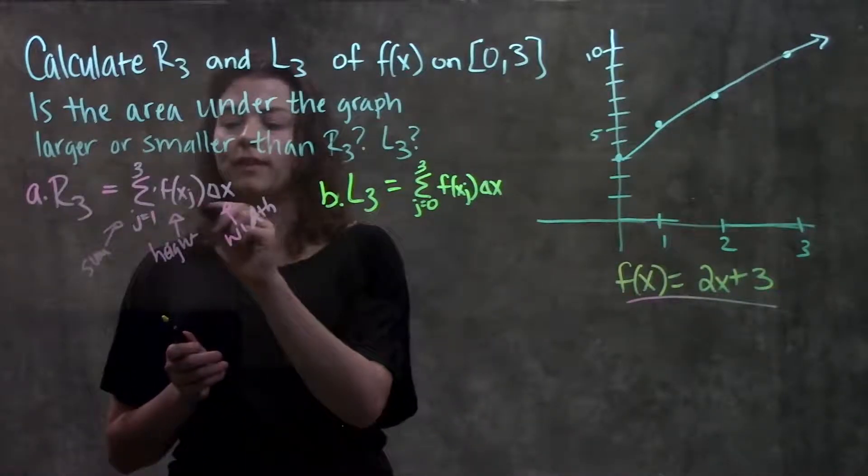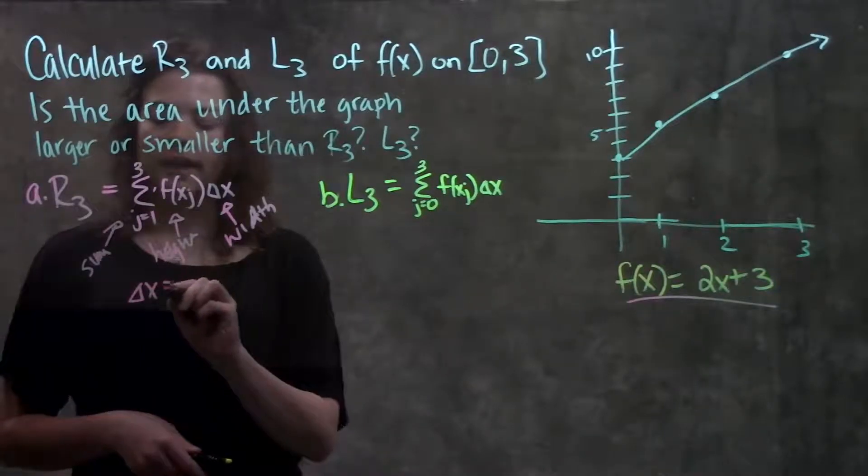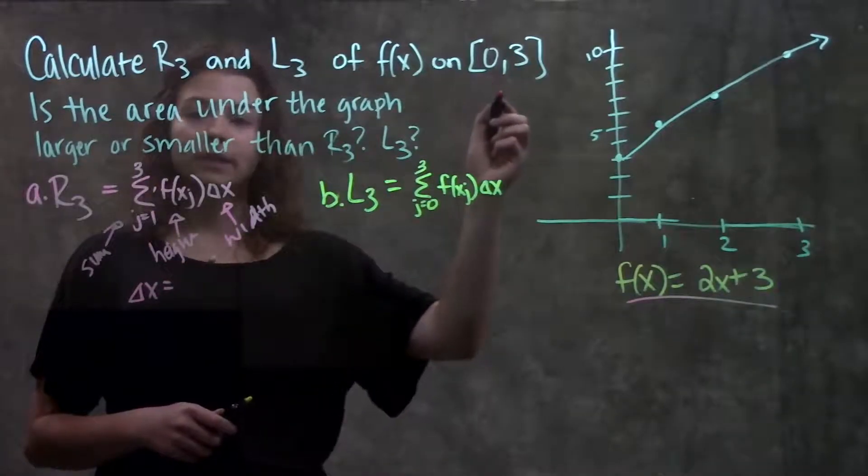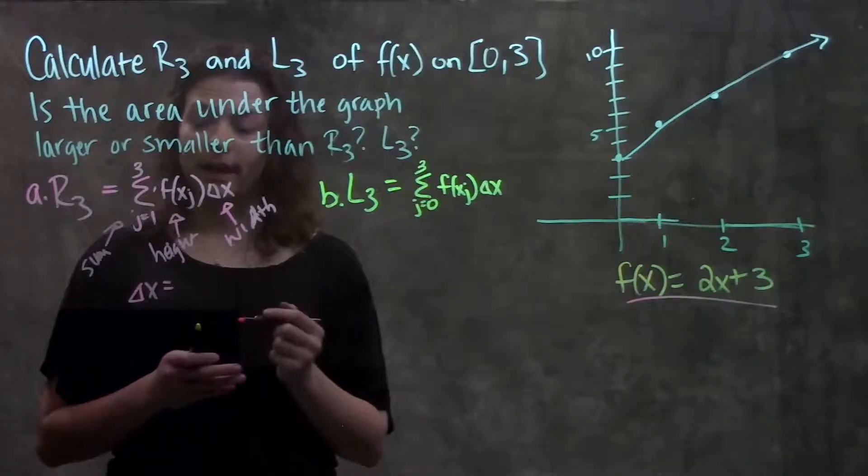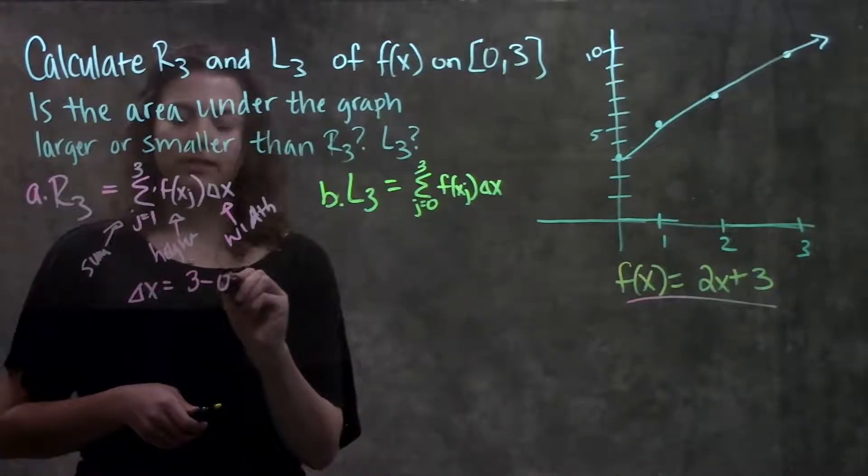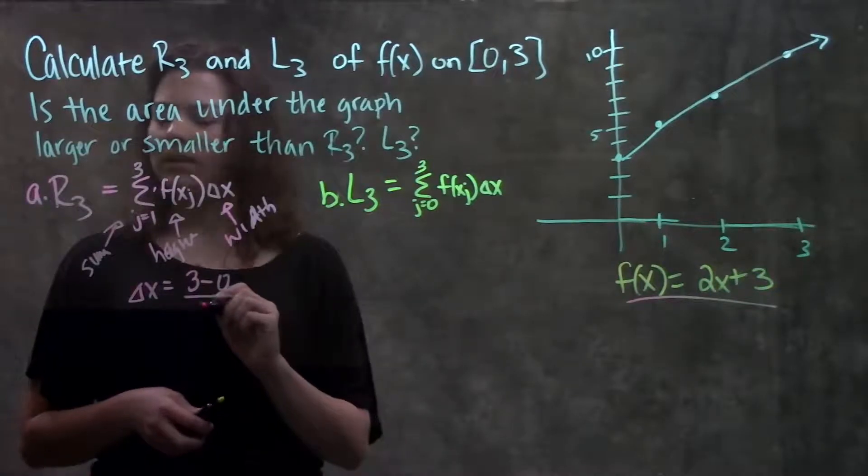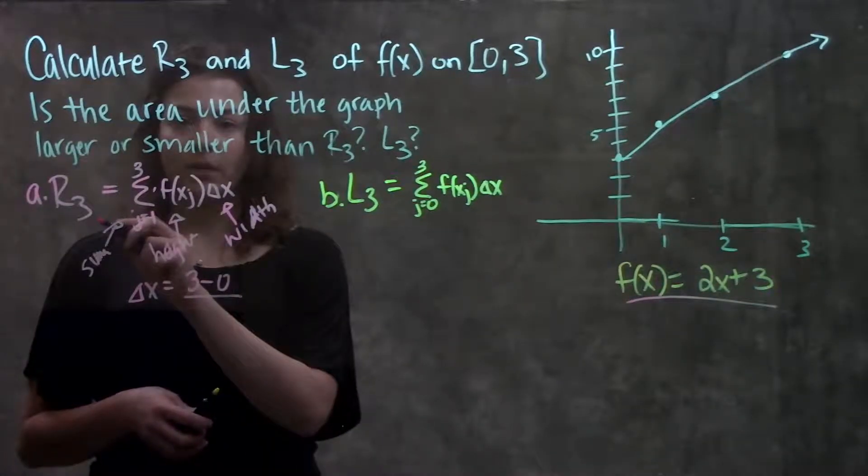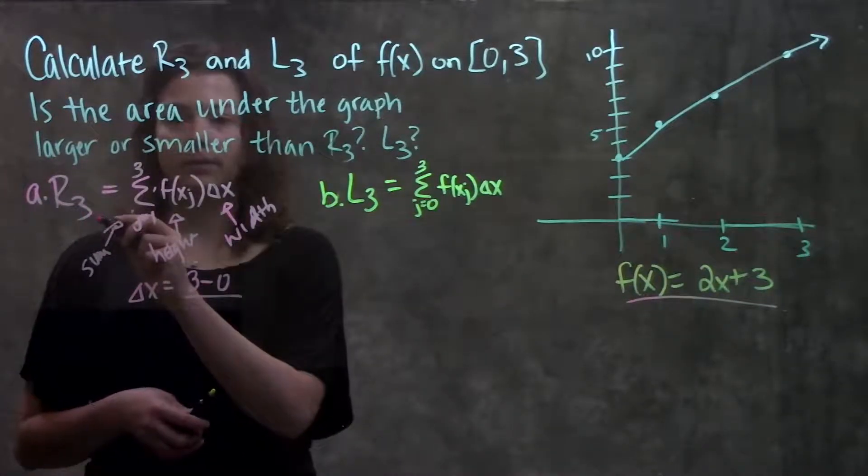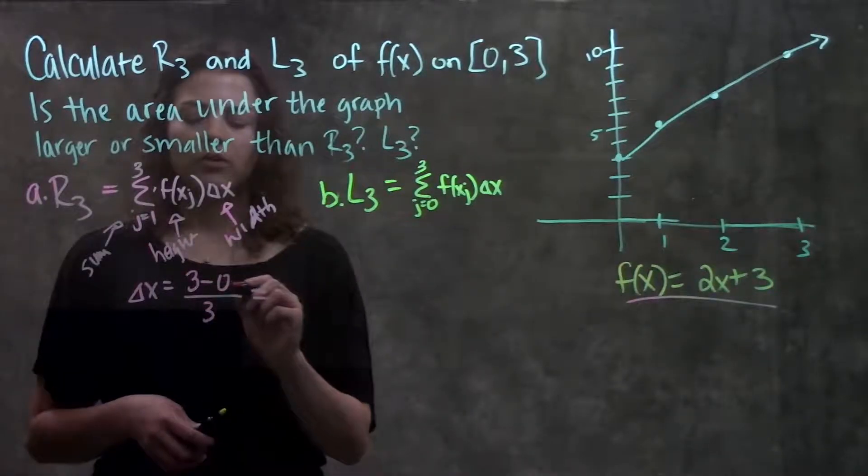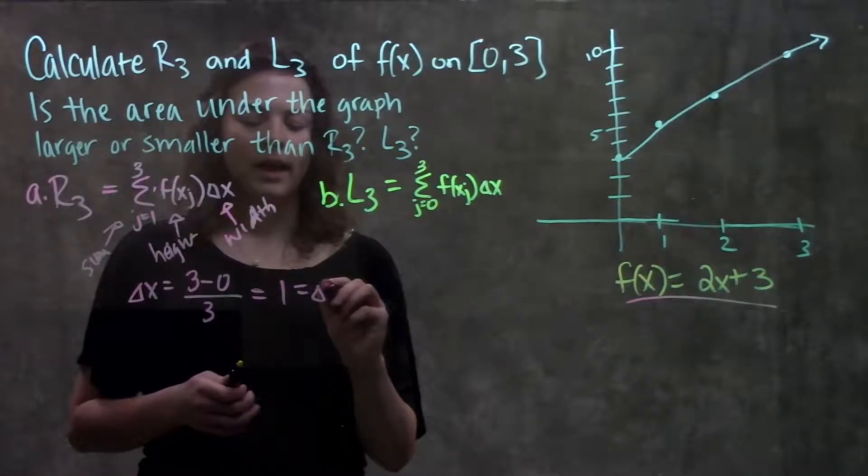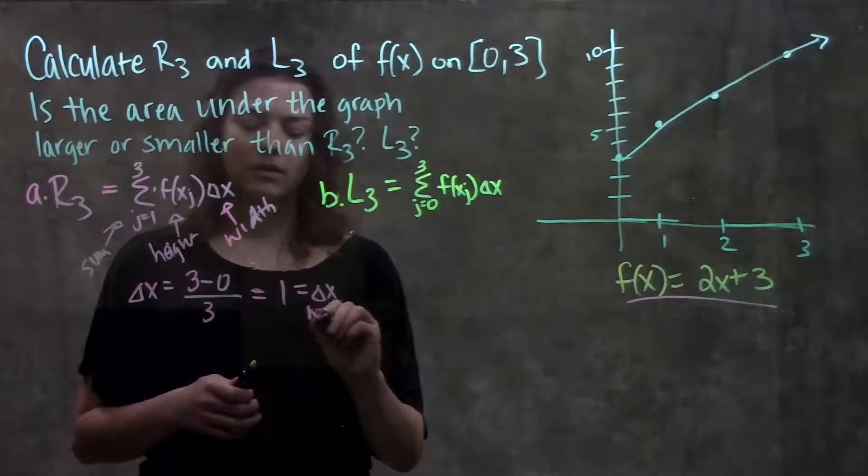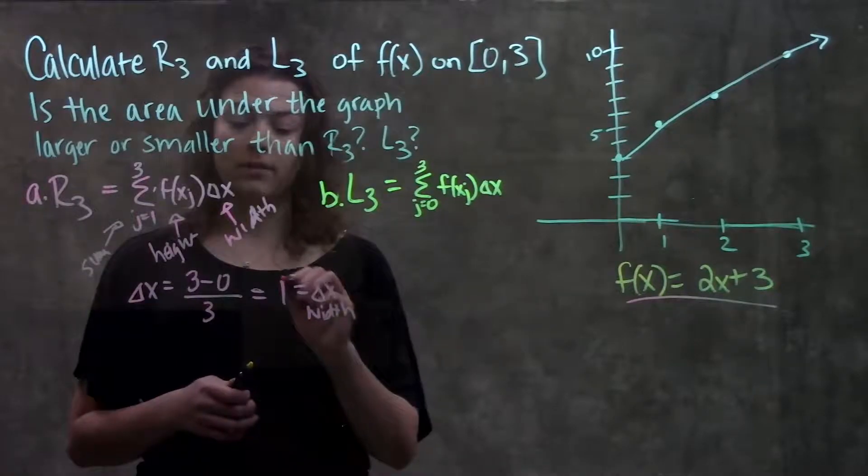To find each of these parts, we'll start with our delta x. Delta x is always found by the difference in our interval divided by however many rectangles they want us to find. So our interval is 3 minus 0 divided by however many rectangles they want, which in this case, looking at the subscript, they want three rectangles. 3 minus 0 divided by 3 gives us 1. And that's our delta x, or the width of each rectangle.